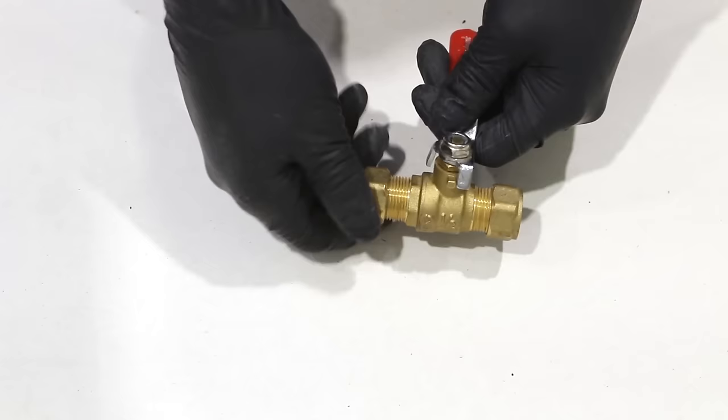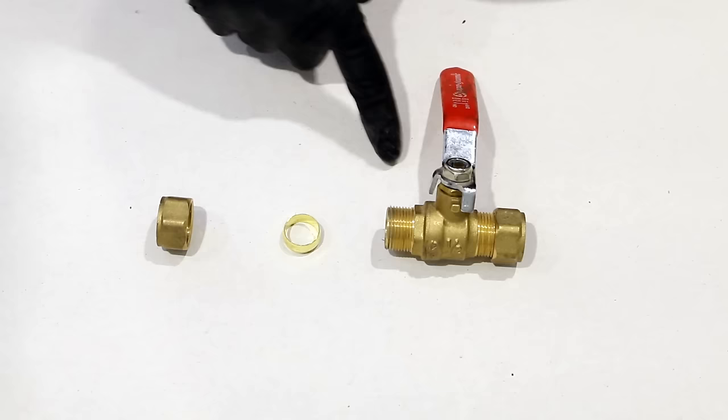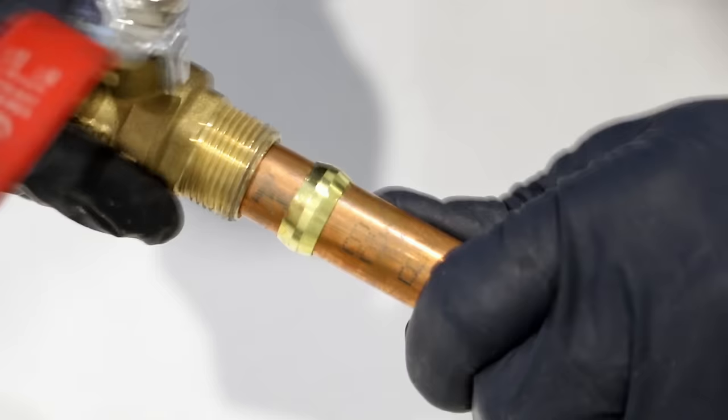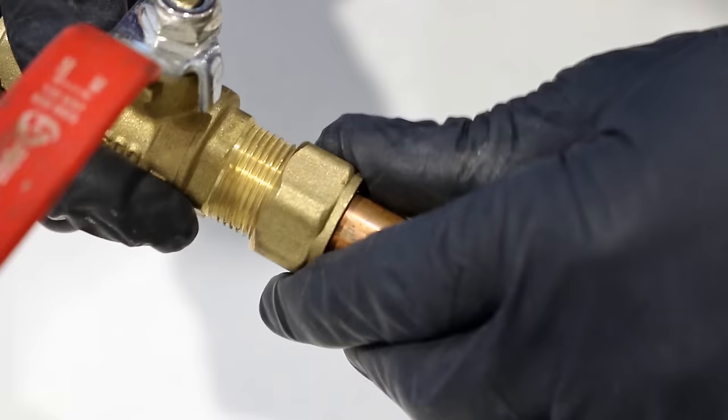Alright, so these fittings are composed of three parts. The valve in this case, a sleeve and a retainer nut. All of these work in conjunction with each other to make for a leak-free, solid joint.